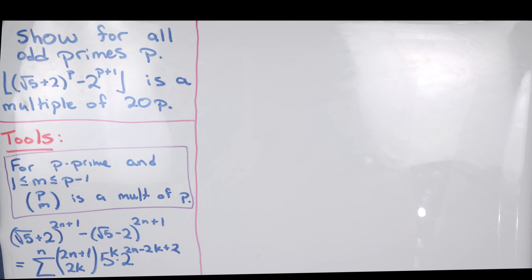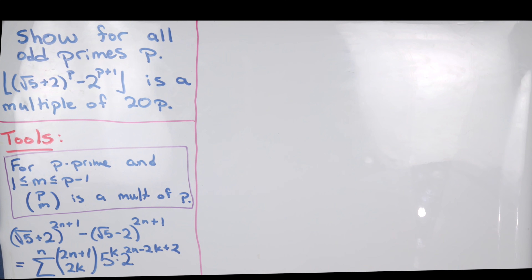Here we're going to look at a nice problem involving one of my favorite functions, the floor function. I haven't done a problem with the floor function in a while, so it's nice to revisit this old friend. We want to show that for all odd primes p, the floor of the square root of 5 plus 2, quantity to the p power, minus 2 to the p plus 1, is a multiple of 20p.